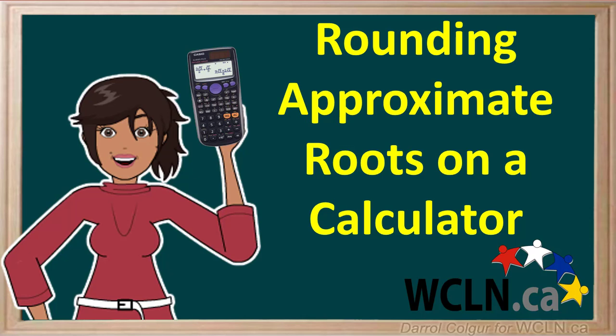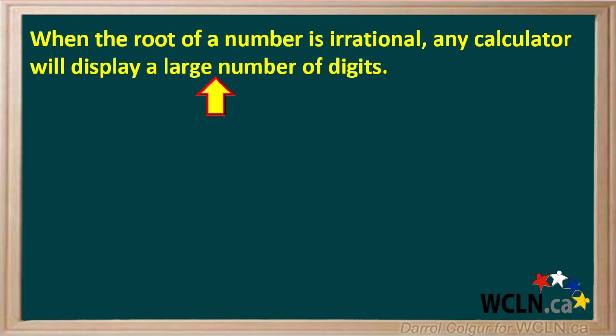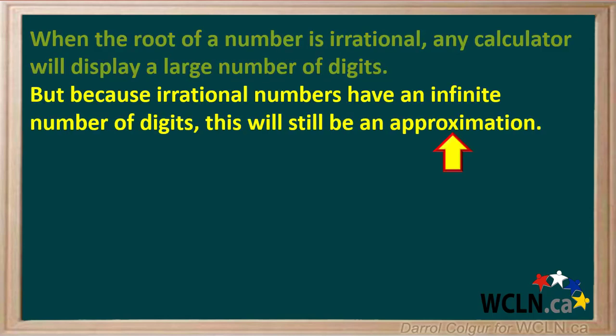Many square roots, cube roots, and other roots are irrational numbers. When the root of a number is irrational, any calculator will display a large number of digits. But because irrational numbers have an infinite number of digits, this will still be an approximation.